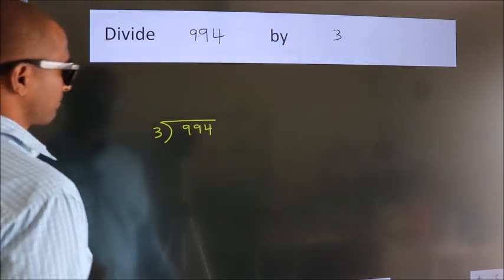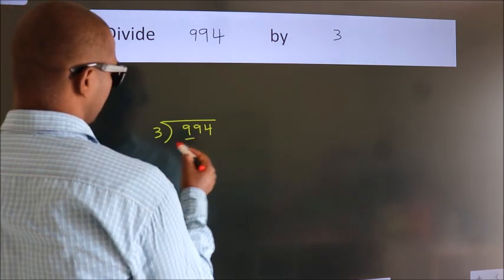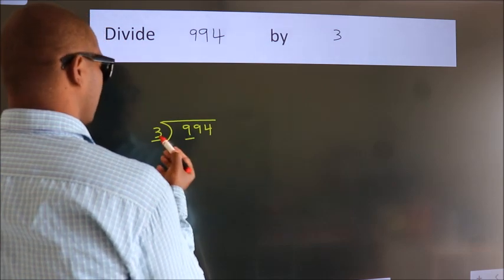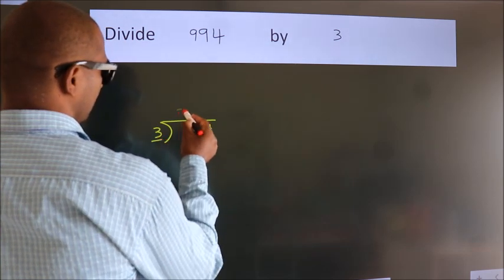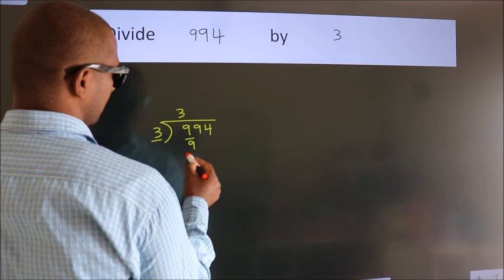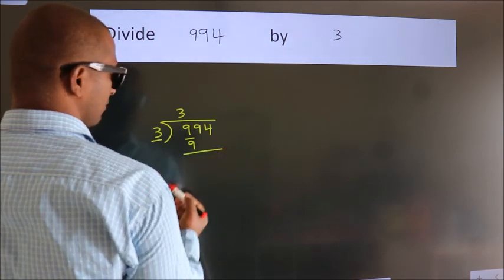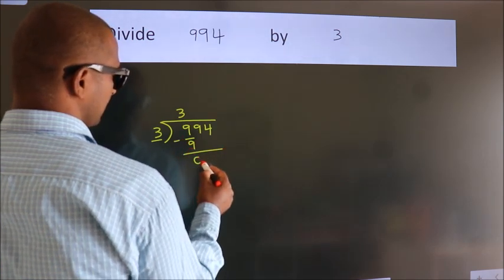Next. Here we have 9, here 3. When do we get 9? In 3 table, 3 threes, 9. Now, we should subtract. We get 0.